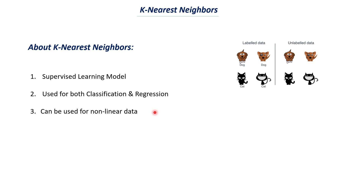An important aspect of k-nearest neighbor is that it can be used for non-linear data. Models like linear regression and logistic regression work well on linear data — meaning data that can be fitted to a straight line, where if one value increases the other increases proportionally. K-nearest neighbors can work well on non-linear data as well. I'll explain why KNN is suitable for non-linear data in the later slides.